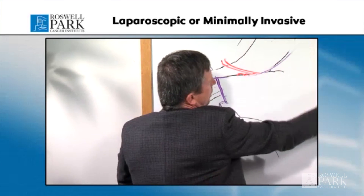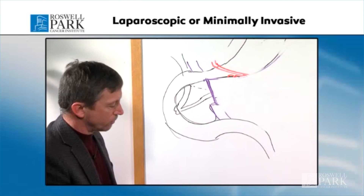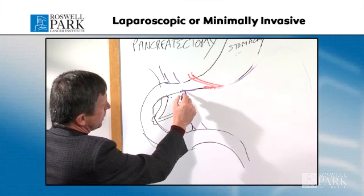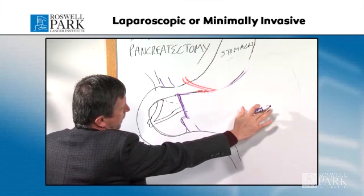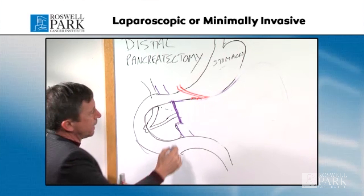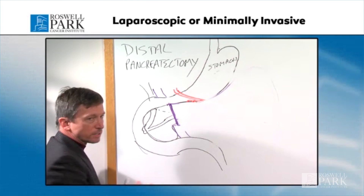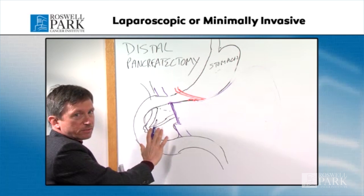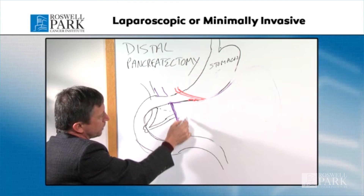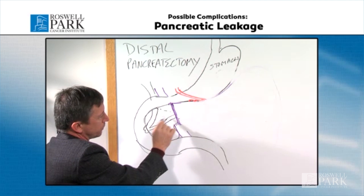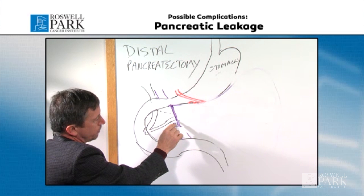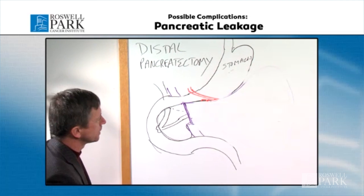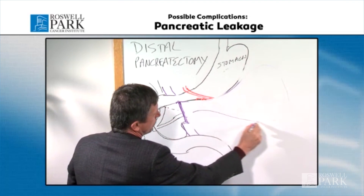This part of the surgery takes a few hours. A couple of things I want to mention that are particularly important to this operation. Once the tail of the pancreas has been removed, there's a stump or end of the pancreas. The pancreas makes digestive juices, and because it's a very soft gland, one of the complications we see after surgery is leakage from the pancreas. That happens anywhere from 20 to 30 percent of the time, so it's not uncommon. What we'll do at the time of surgery is put a drain.